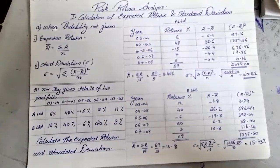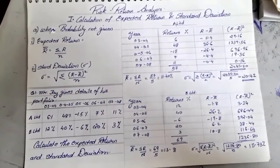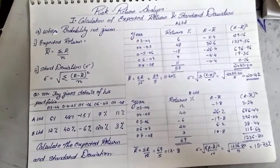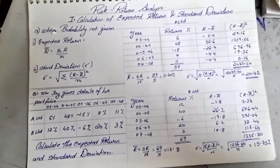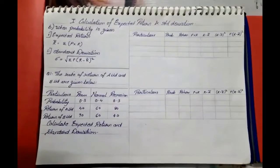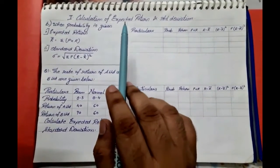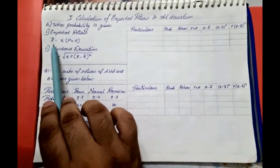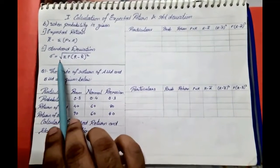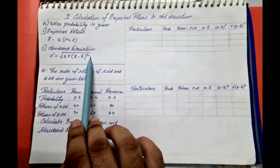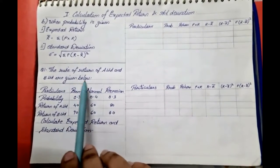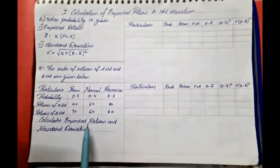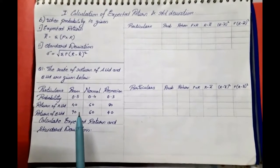So with this we were able to solve sums based on expected return and standard deviation when probability was not given. This was the very first type. Now we will be solving sums in which we have probability. When probability is given, the expected return formula is r̄ = Σ(p × r), and standard deviation is the square root of Σp(r − r̄)². The question given here is: the rate of return of A Limited and B Limited are given below, with probability provided under three conditions. We need to find the expected return and standard deviation.